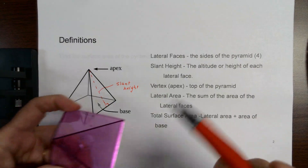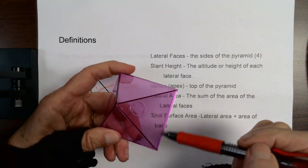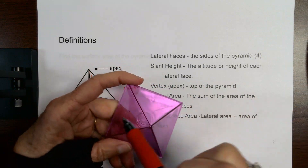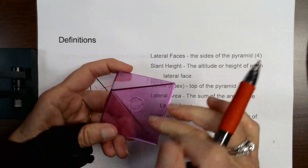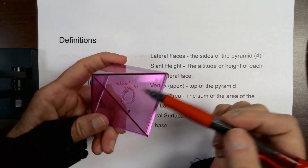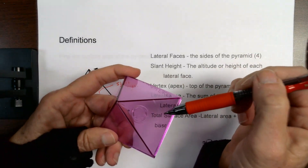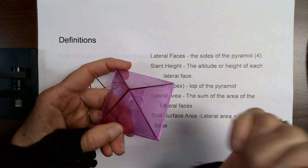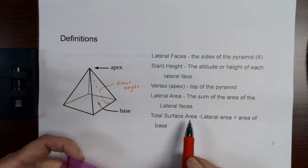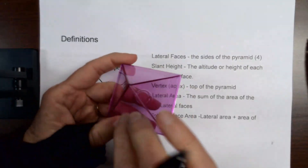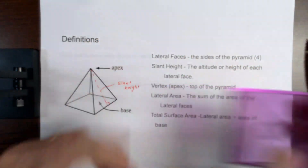The lateral area is the sum of each of those triangles. I would find the area of one triangle and add all four of them — they're going to be the same on a square pyramid. If I'm talking about total surface area, it's the sum of the area of the lateral faces plus the area of the base.